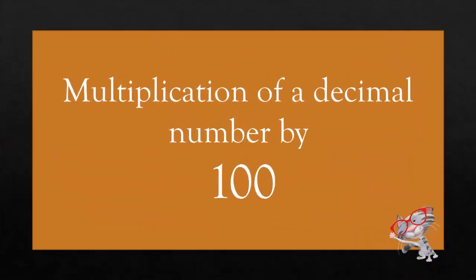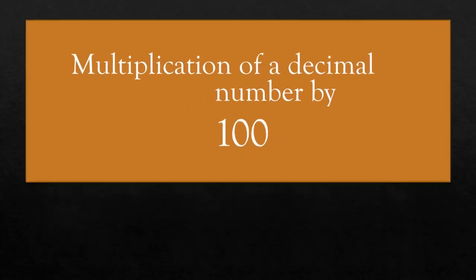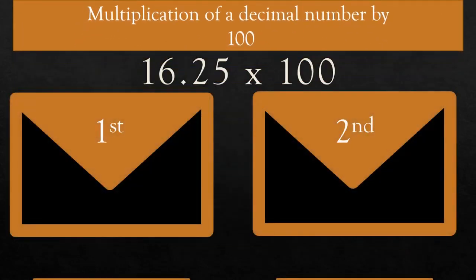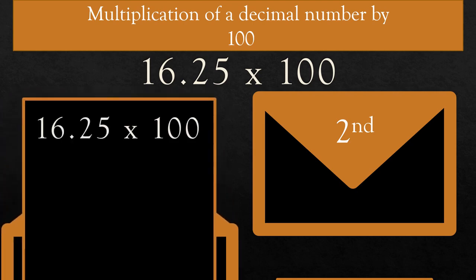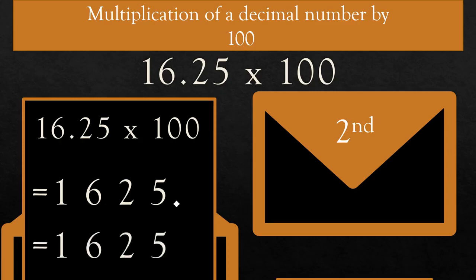Let us study multiplication of decimal number by 100. For example, 16.25 × 100. There are two ways to solve this question; you can use any one of the methods. First way: if we multiply 16.25 × 100, the decimal point shifts two places to the right. So the answer is 1625.